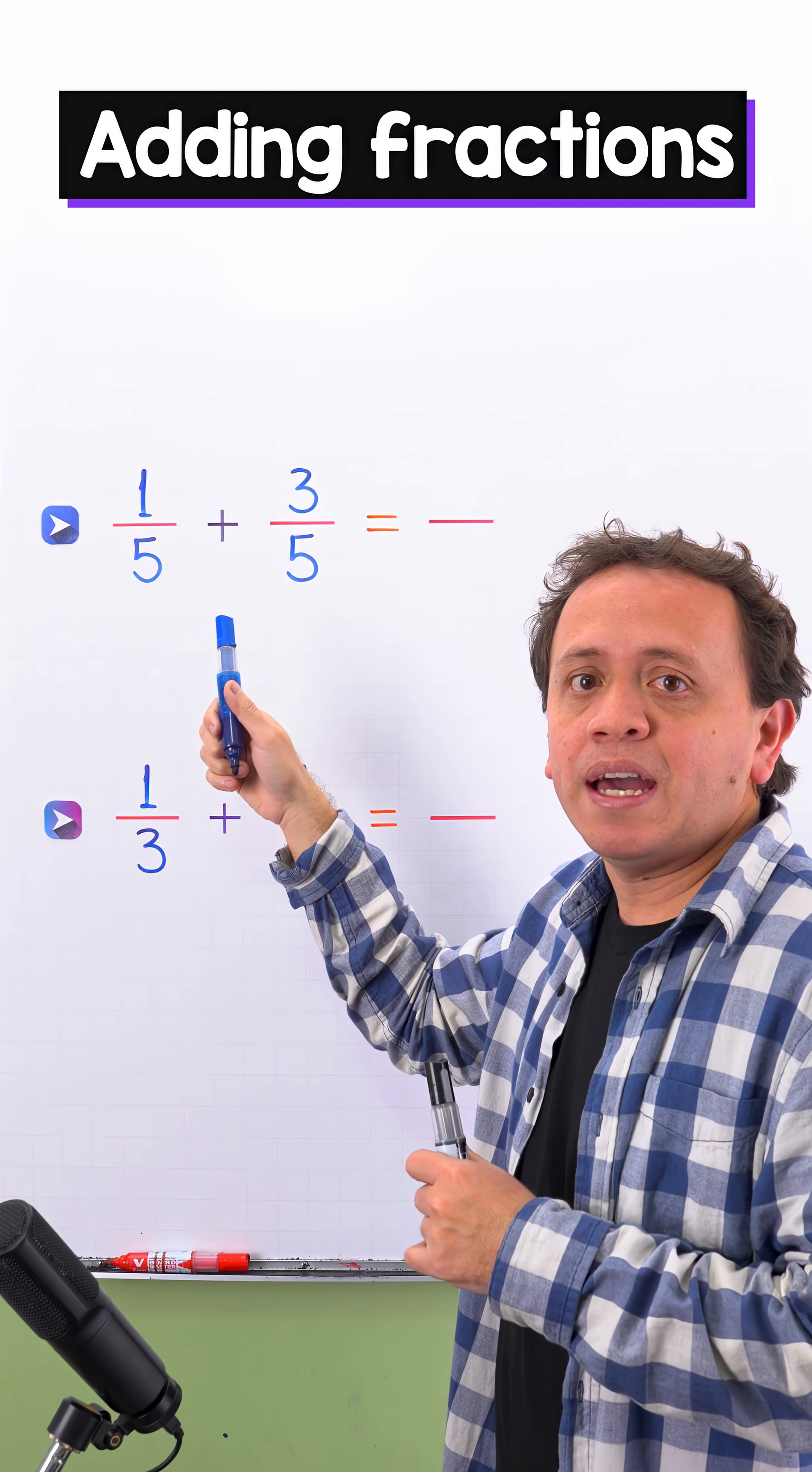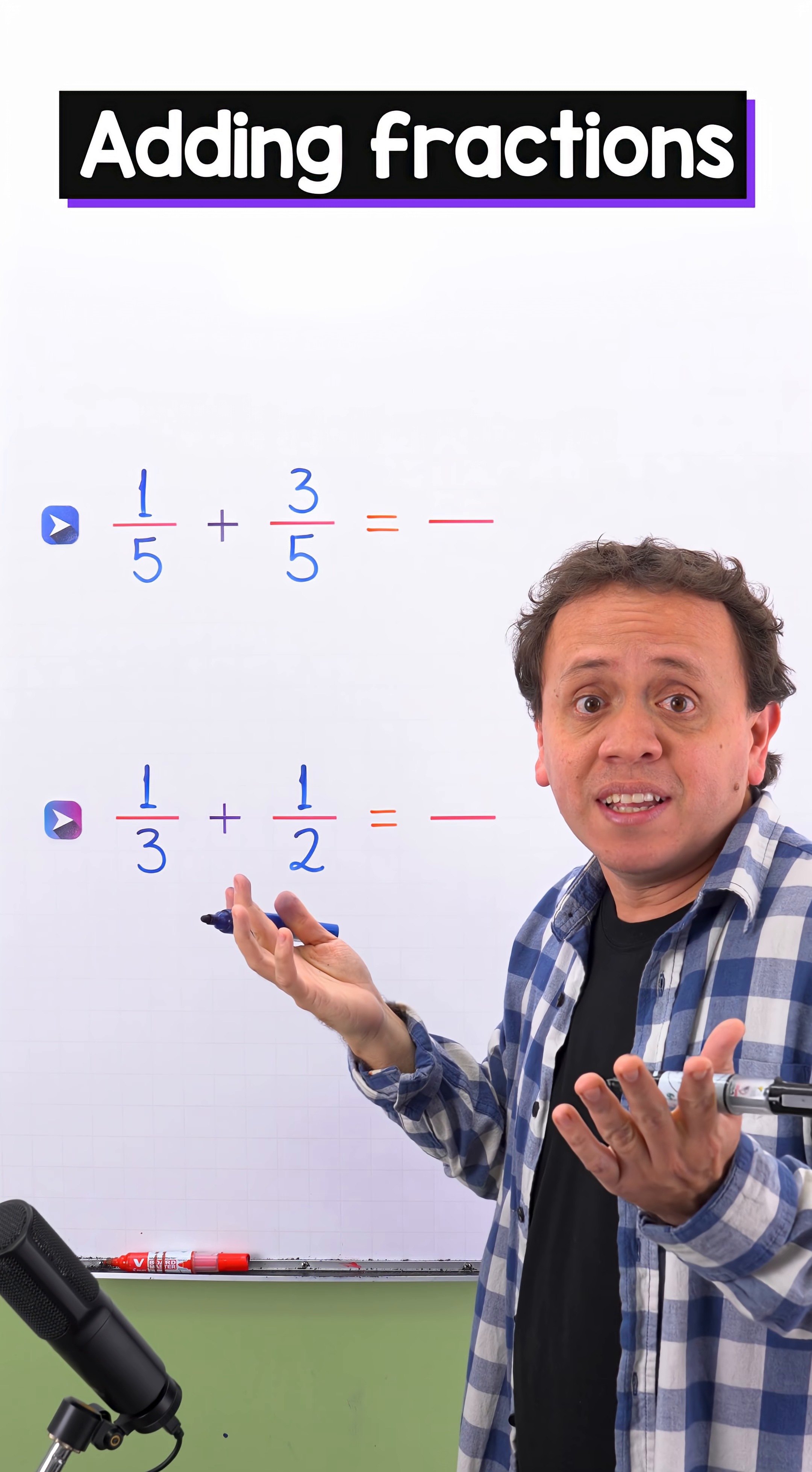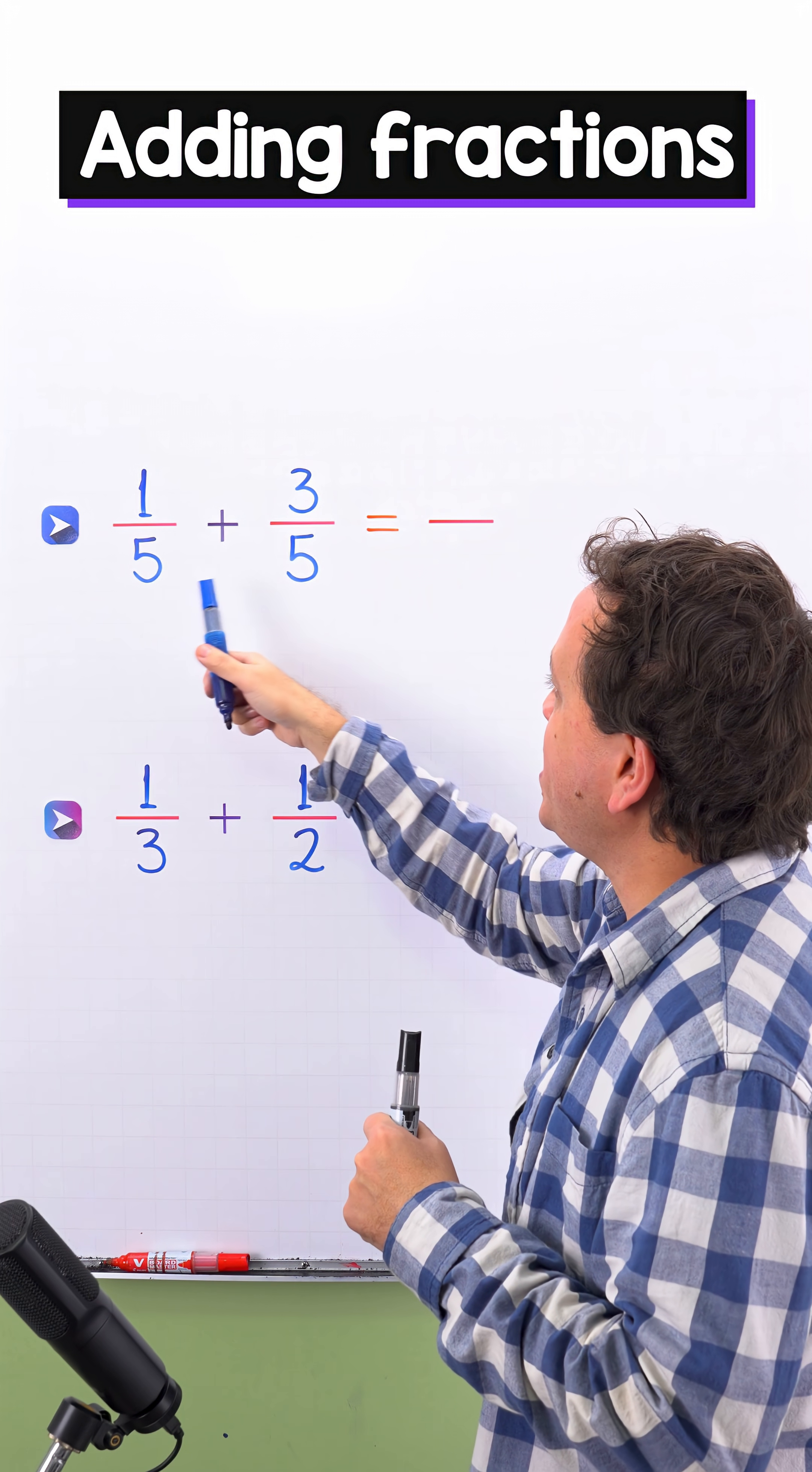In the first example, we have one-fifth plus three-fifths. As you can see, these two fractions have the same denominator.